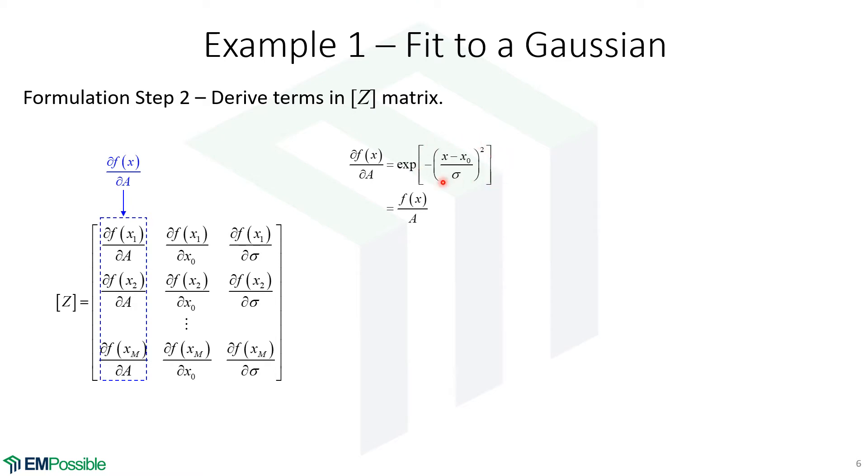Now, if we look at this, that is our original function divided by A. And it'll turn out that's a slightly easier way to calculate it in the code because we'll have already calculated the function.